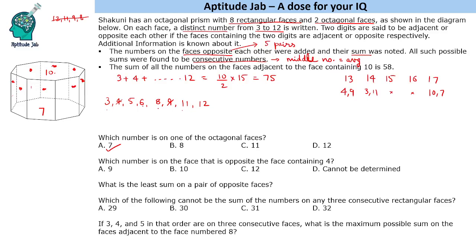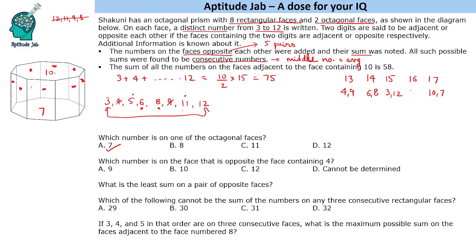We can also make 14 using 6 and 8. With 6 and 8 making 14, we can then make 15 using 3 and 12, and the remaining 5 and 11 make 16. That is one valid possibility: pairs (4,9), (6,8), (3,12), (5,11).